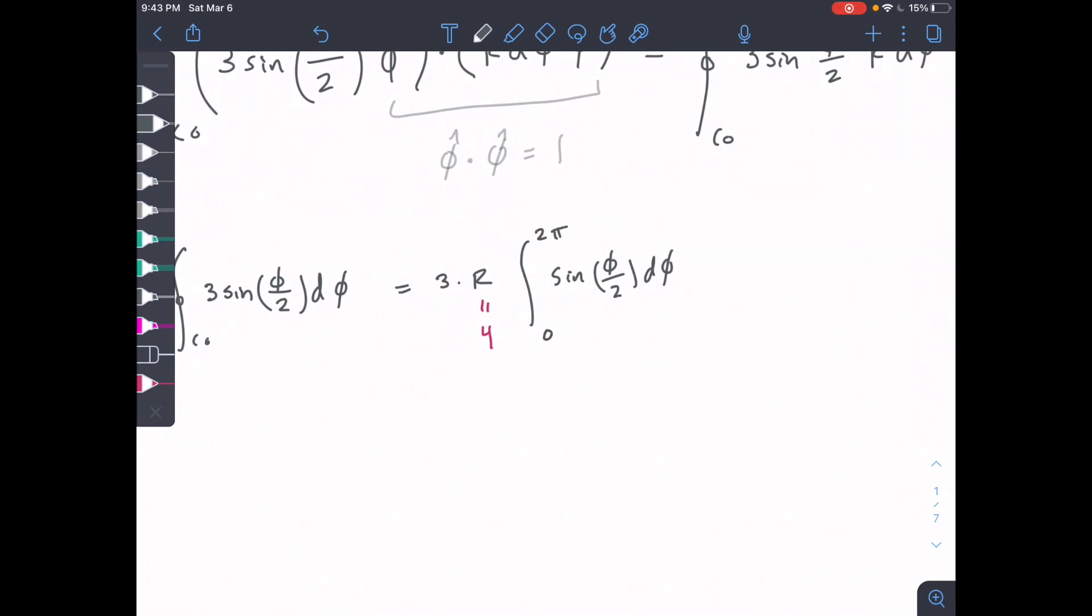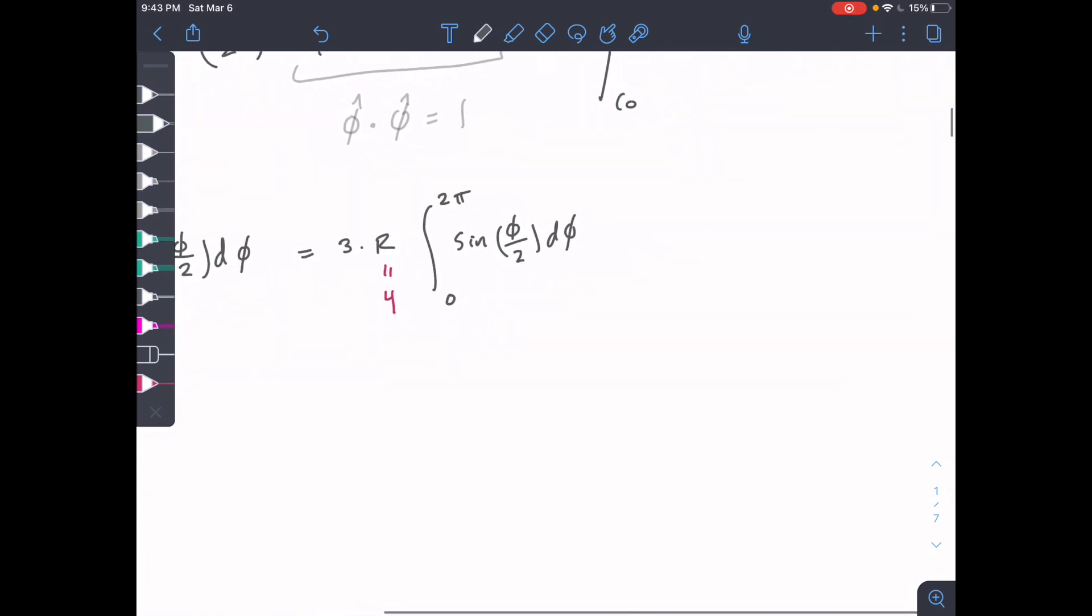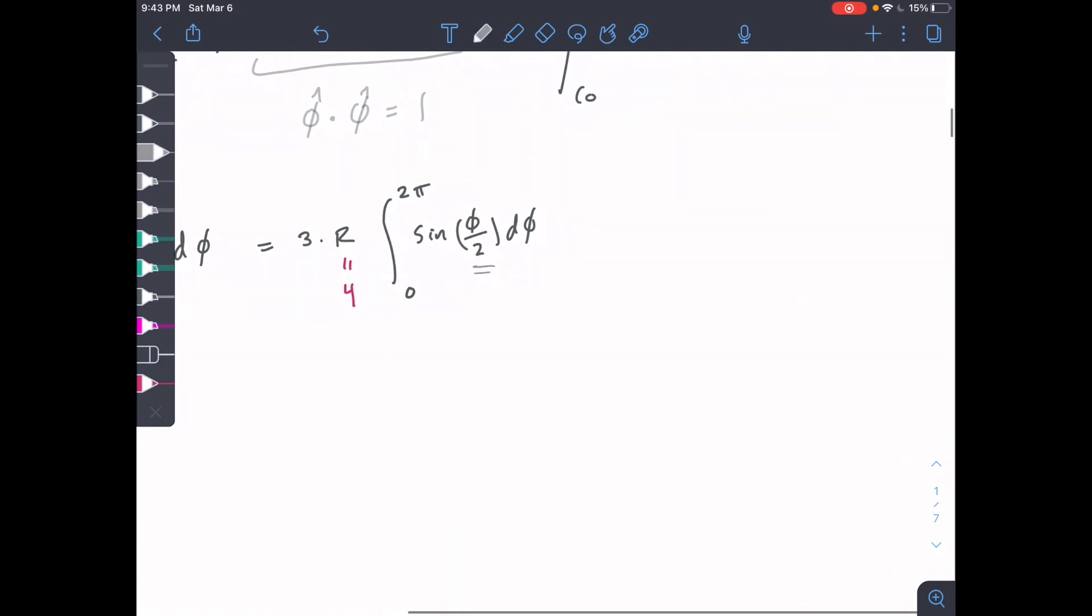To solve this, we're going to have to do a little trick here because we have this phi over 2. We're going to do a u sub for this. It won't be a super complicated one.